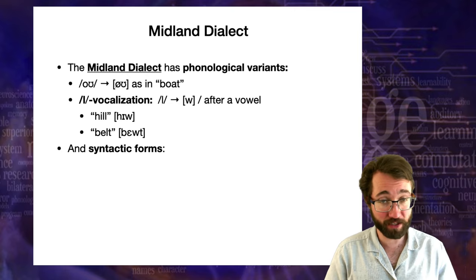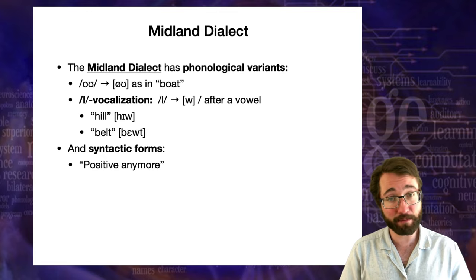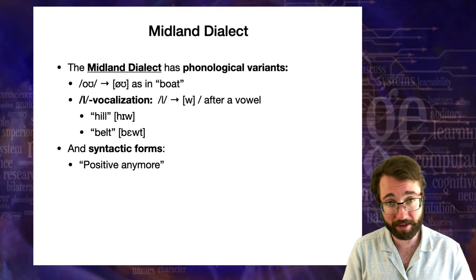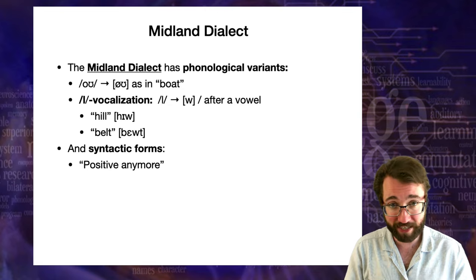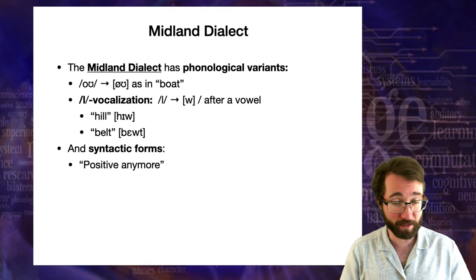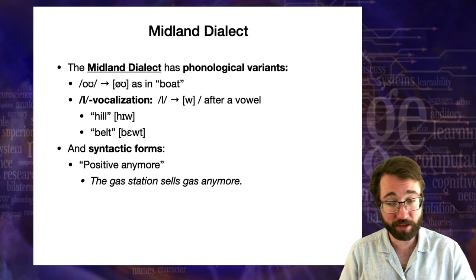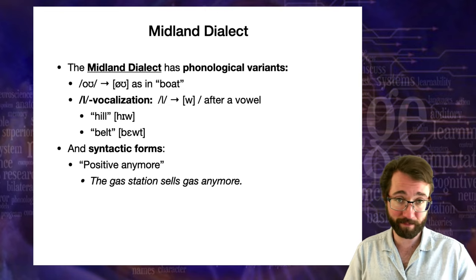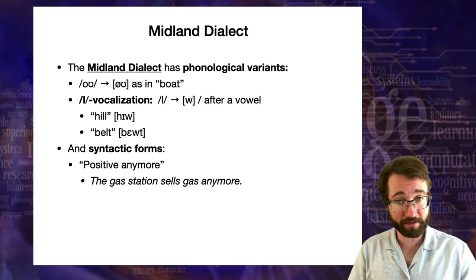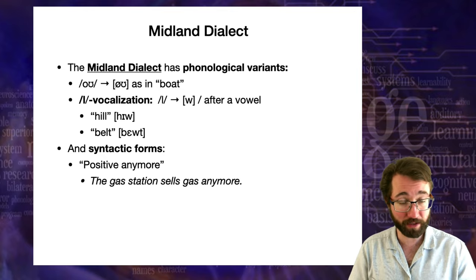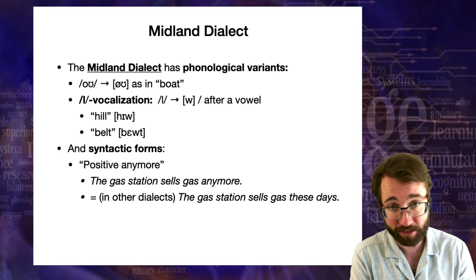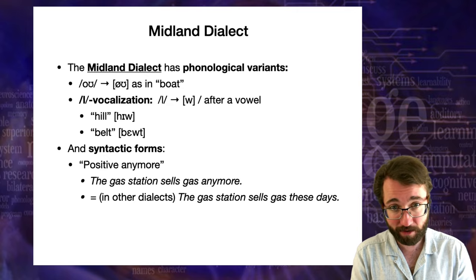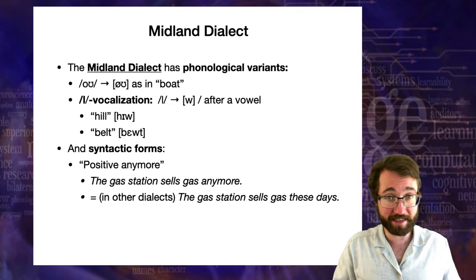There are also syntactic forms particular to the Midlands — in particular, the 'positive anymore.' This is really how you identify someone from this area, and the main thing you'd notice about someone who speaks this dialect. In a Midland dialect, you can say something like 'the gas station sells gas anymore.' In California English you'd put a star on this and call it ungrammatical, but it's perfectly well-formed in the Midlands dialect. It means something like 'the gas station sells gas these days — like it didn't used to, but now it does.'